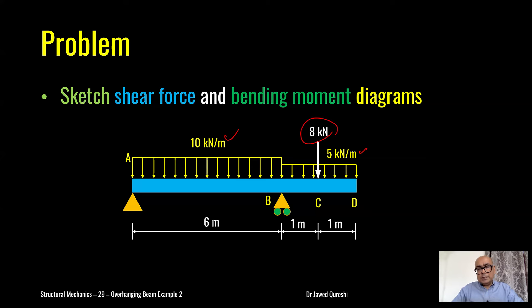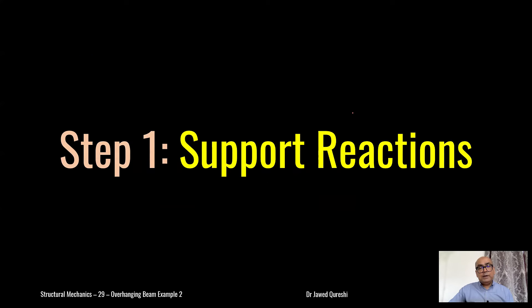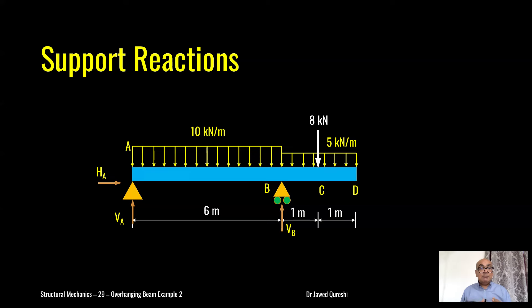Note that the loading in the A-B span is far more than the B-D span. It is 10 times 6, which means 60 kilonewtons. On the right side I have 5 times 2 = 10, plus 8 = 18 kilonewtons. This will mean that the A-B span is going to sag.